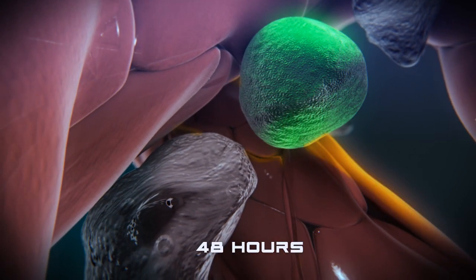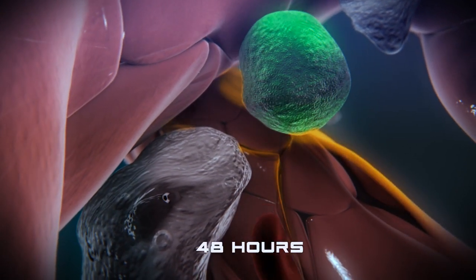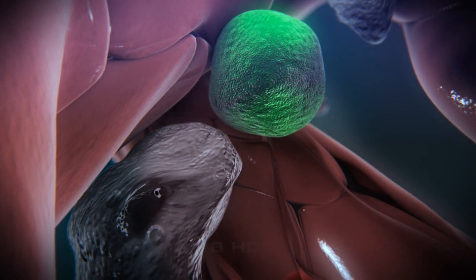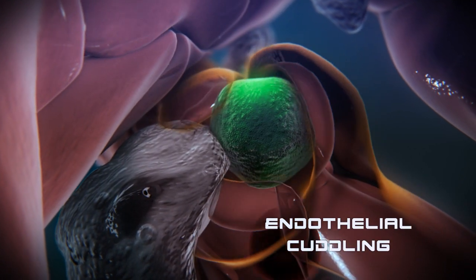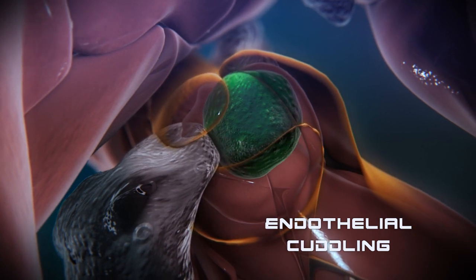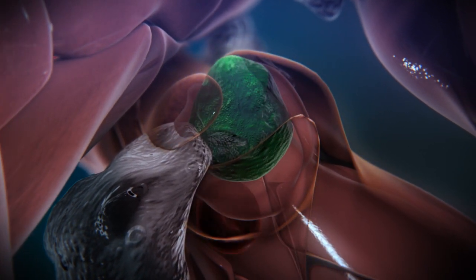When this happens, the endothelial cells, or blood vessel cells, actually wrap themselves around the stem cell in a process we call cuddling. And this brings the stem cell next to the stromal cell.